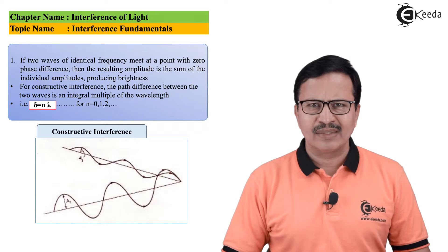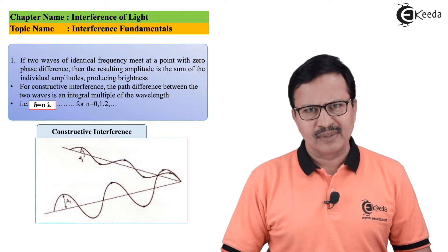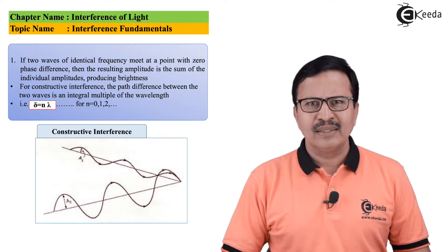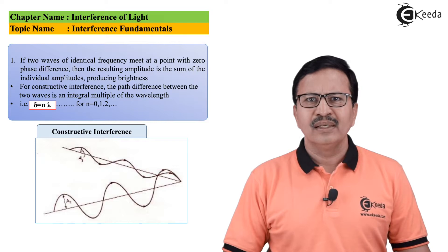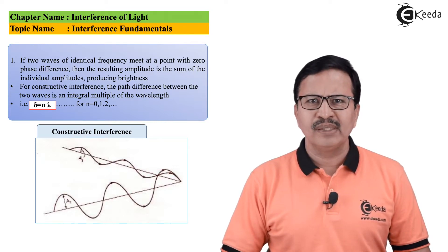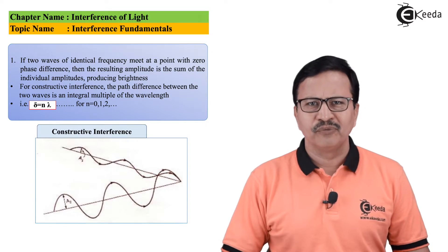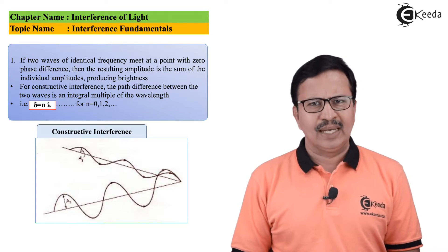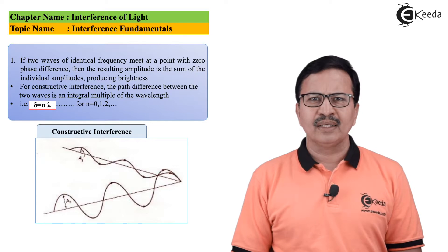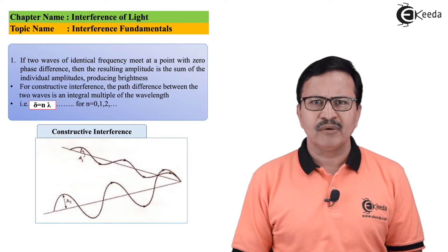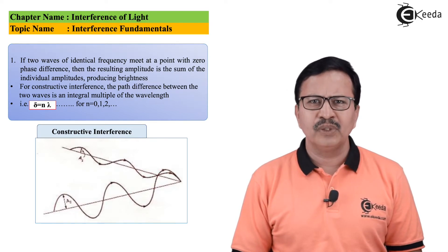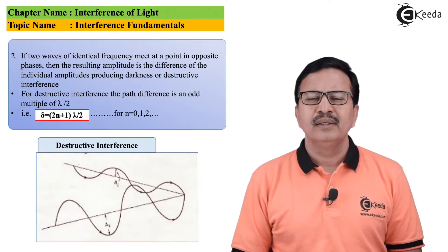When two such waves of light interfere with each other in phase, then what we have is constructive interference, and this will lead to brightness. In such a case there is going to be an addition of the individual amplitudes, and the path difference delta is going to be an integral multiple of the wavelength: delta = nλ, where n = 0, 1, 2, etc.